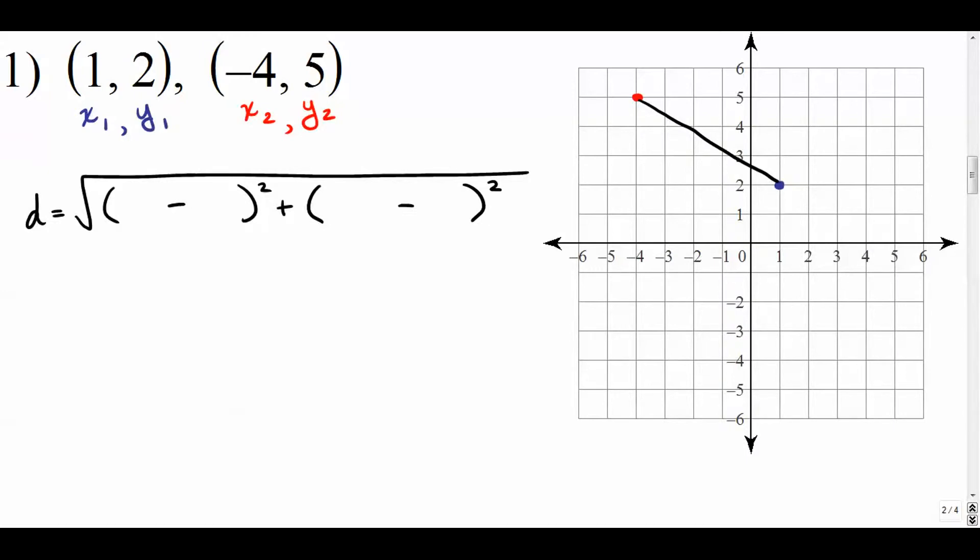Now this right here is going to be x sub 2 which is negative 4 minus x sub 1 which is positive 1. Right here is y sub 2 and right here is y sub 1 which is positive 2. And we're just going to simplify. So we have negative 4 minus 1 is negative 5. 5 minus 2 is 3. Simplify one more time. Negative 5 squared is 25. 3 squared is 9.